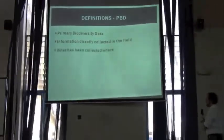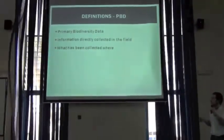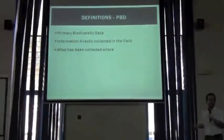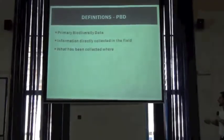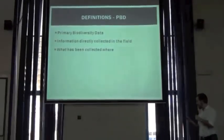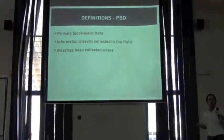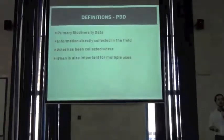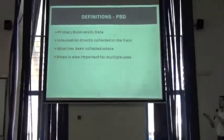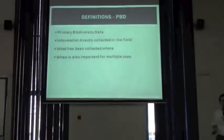Another way to put it is that a primary biodiversity data record — one record, one thing — is the definition of what has been seen or collected. It has a taxonomic part: what has been seen, and the location of that taxon. There's also a third element that's really important because it allows for a wide range of possible uses: that's the when, the event date in which the taxon has been seen or collected.